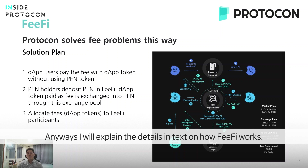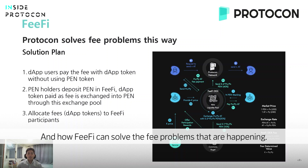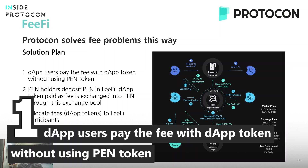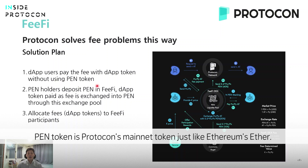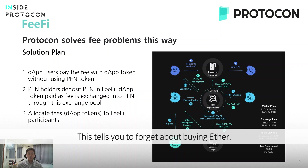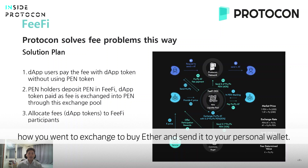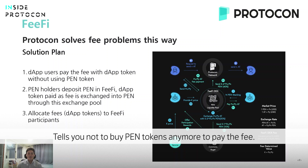I will explain in detail how fee-fi works and how fee-fi could solve those fee problems. First, the app user pays the fee with the app token without using the pen token. Our pen token is our mainnet token — Protocon's mainnet token, like Ethereum's Ether. So you don't need to buy pen token anymore to pay fees. You can just use your DApp token to pay the fee.